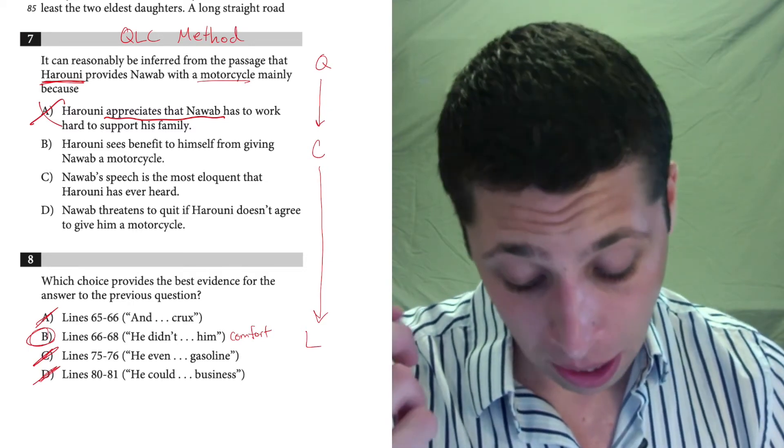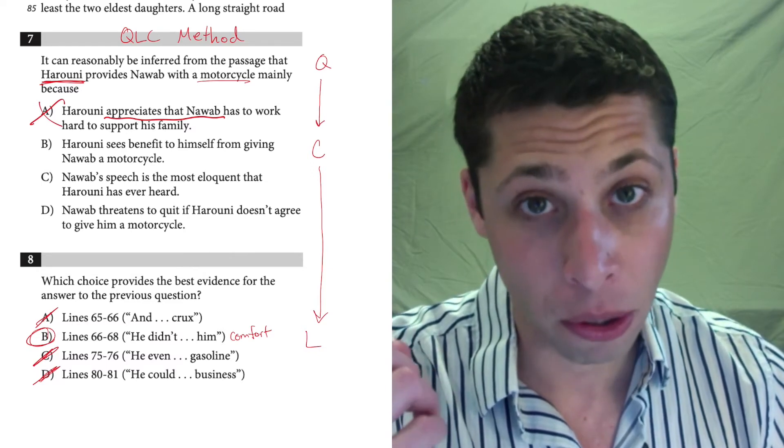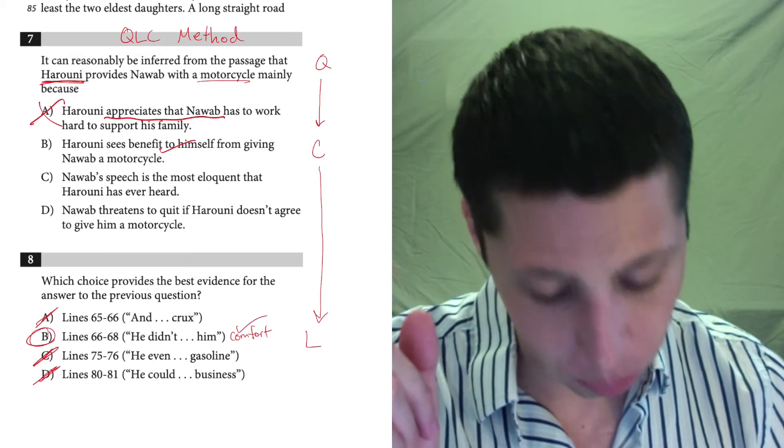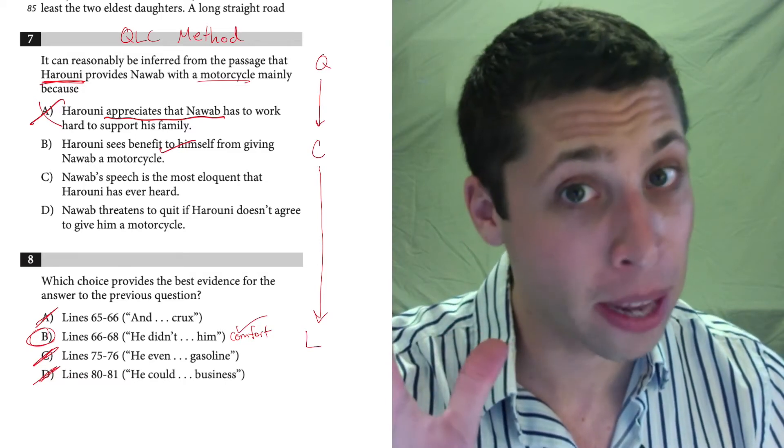Choice B, Haruni sees benefit to himself from giving Nawab a motorcycle. That looks good. Benefit to himself matches nice with caring about his own comfort. Okay. So, I would keep that in the mix.